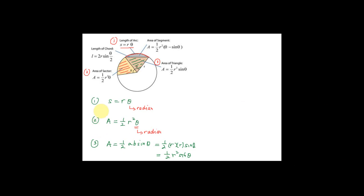So these three formulas — the arc length S equal to R theta, the area of sector half R square theta, and the area of triangle half R square sine theta — are very common in the exam. Make sure you know the formulas well.